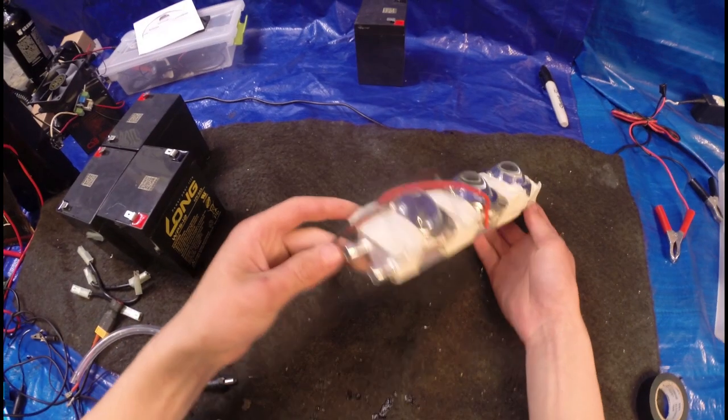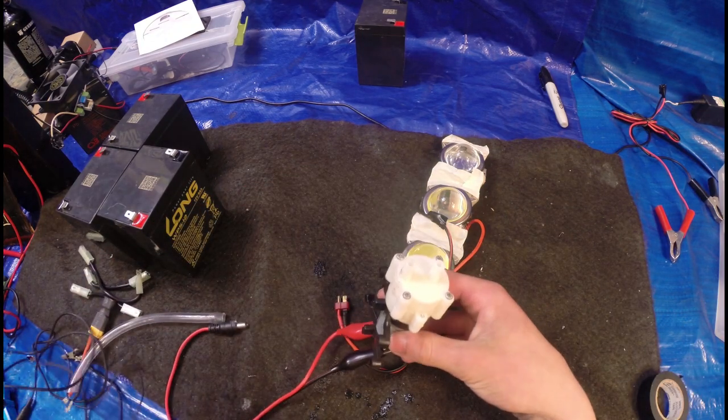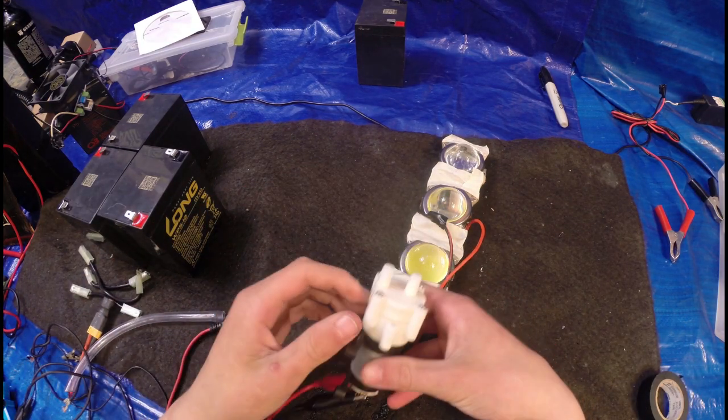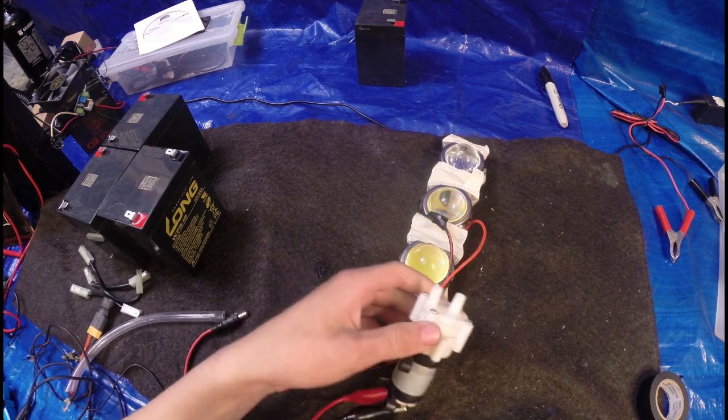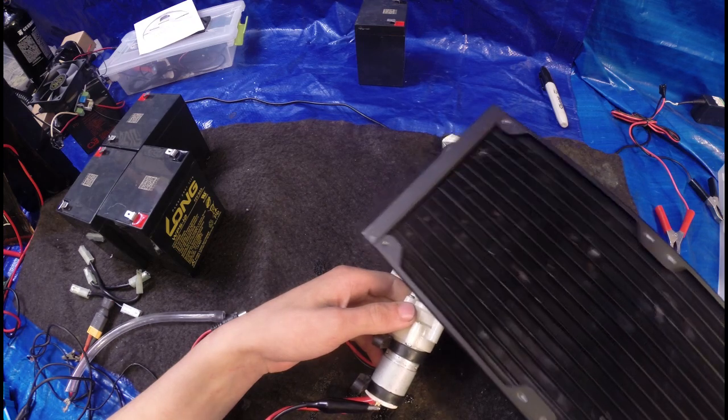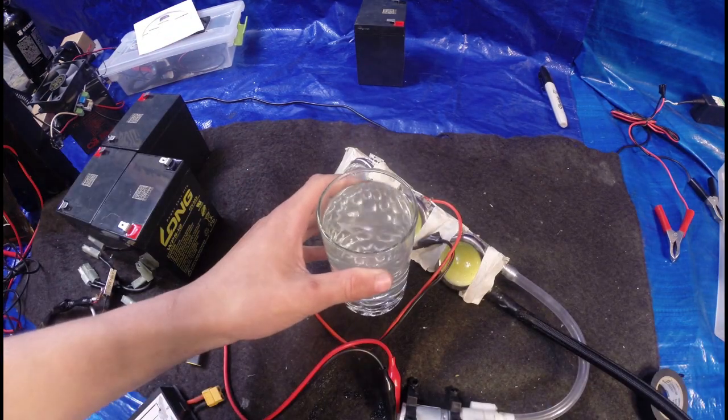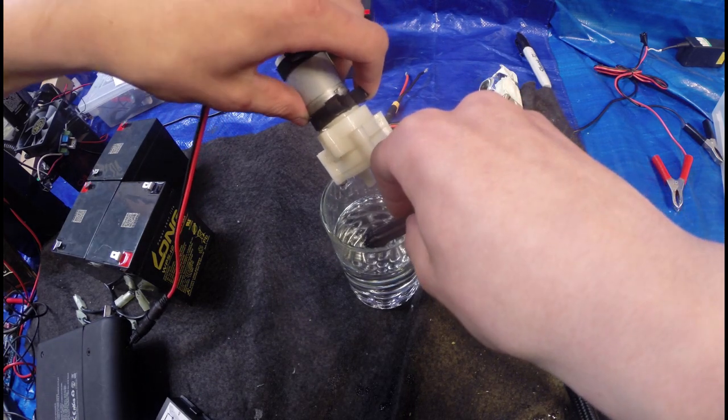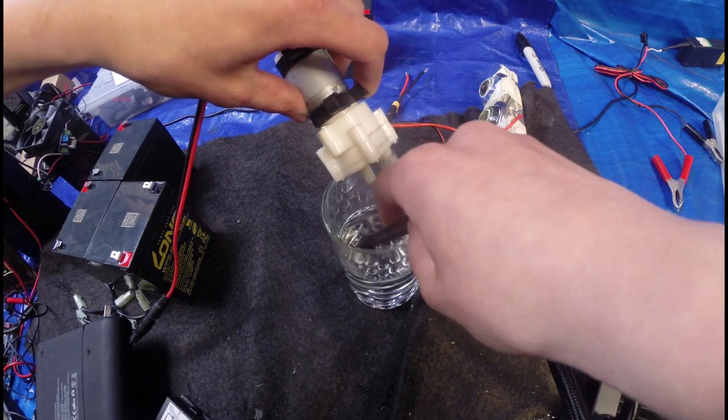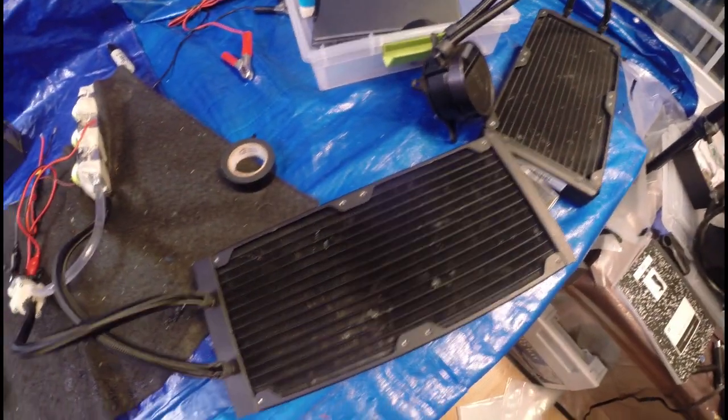So let's get the water cooling set up. I'll be using this 12 volt pump. This will basically be pumping water from the lights that get really hot to the radiator. Now we have a complete water cooling circuit.